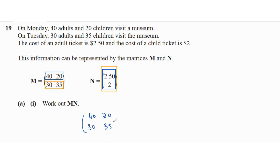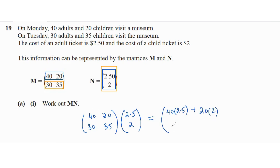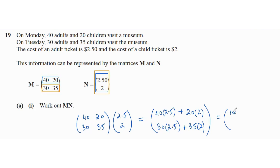The matrix multiplication is: 40 times 2.5 plus 20 times 2 for the first row, and 30 times 2.5 plus 35 times 2 for the second row. This gives 100 plus 40 equals 140, and 75 plus 70 equals 145. So the result matrix is [140, 145].